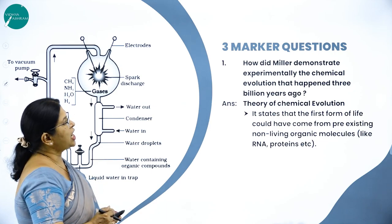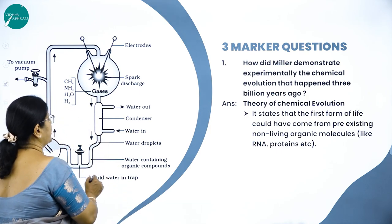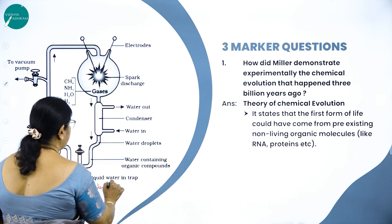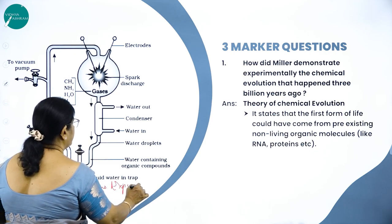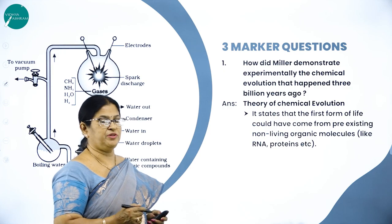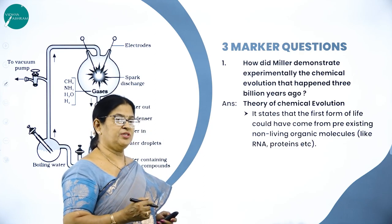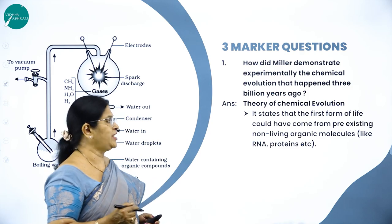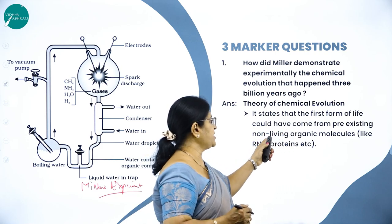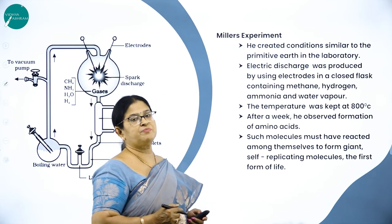Three-marker question: How did Miller demonstrate experimentally the chemical evolution that happened 3 billion years ago? This is the important diagram of Stanley Miller's experiment, done to prove the theory of chemical evolution. The theory states that the prebiotic gases — methane, hydrogen, water vapor — were responsible for the occurrence of life forms. The first form of life could have come from pre-existing non-living organic molecules like RNA, proteins, etc.